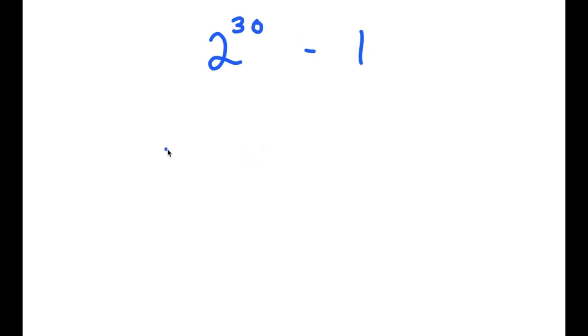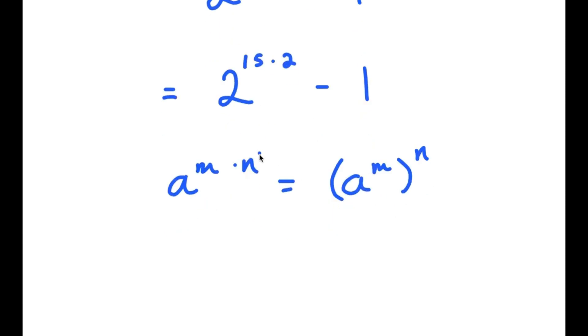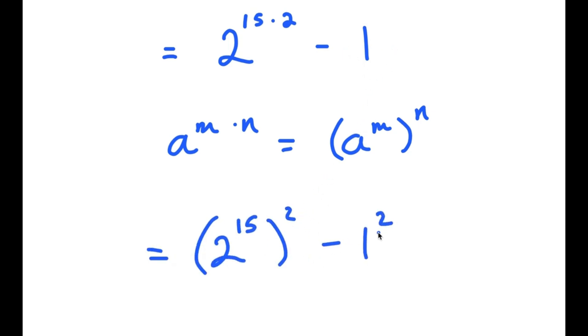In this video, I'm going to solve the problem 2 to the power of 30 minus 1. To solve this, I'm going to rewrite this as 2 to the power of 15 times 2 minus 1. Using the property a to the power of m times n equals a to the power of m to the power of n, 2 to the power of 15 times 2 becomes 2 to the power of 15 to the power of 2. And negative 1 is the same as negative 1 squared.